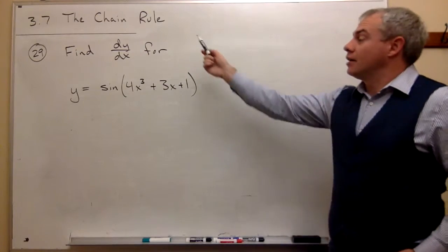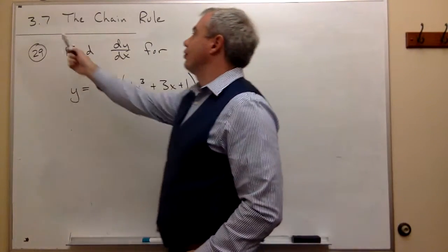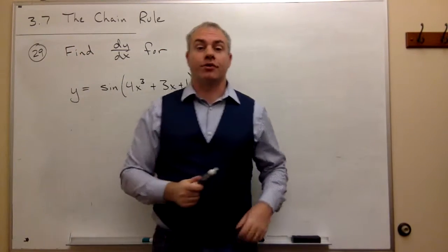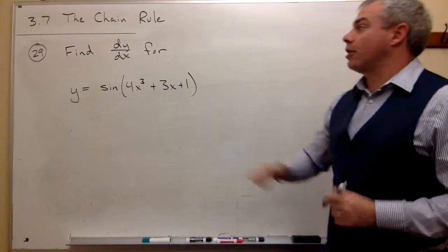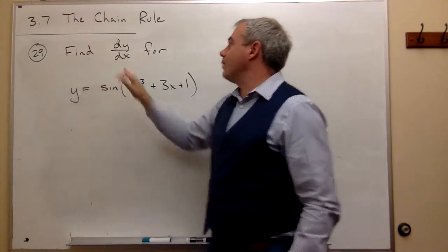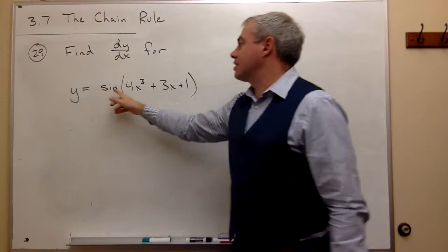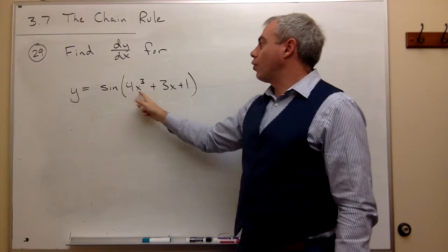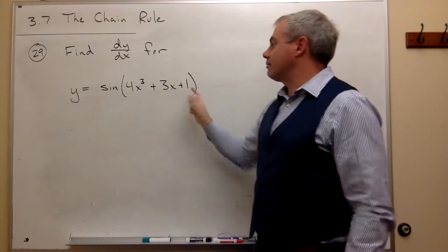Welcome back. Today we'll be talking about section 3.7, the chain rule, and we want to start with problem number 29, which says let's find dy dx for y equals sine of 4x cubed plus 3x plus 1.